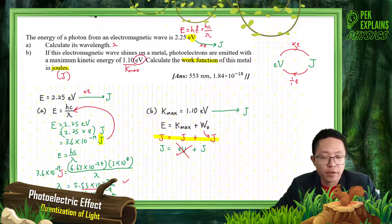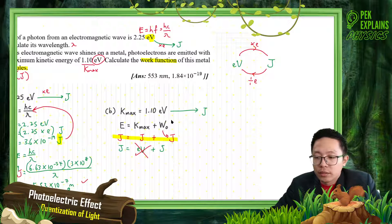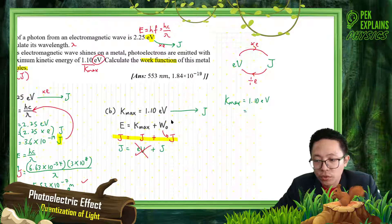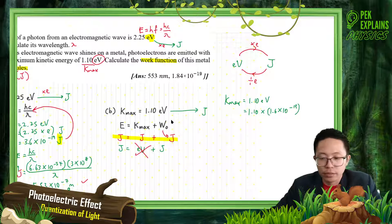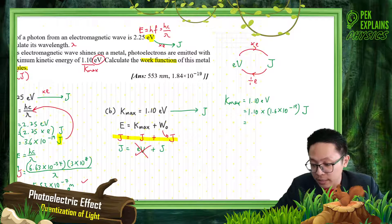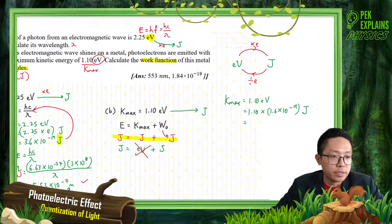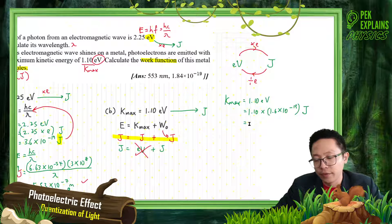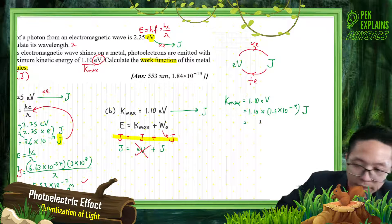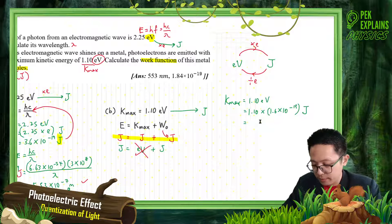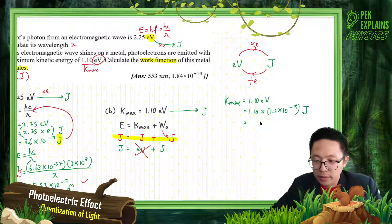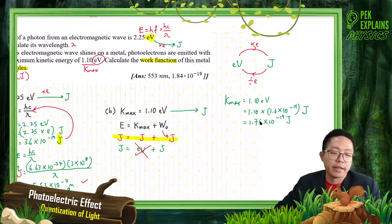To find the kinetic energy in joule: it is 1.10 electron volt, so we multiply by the electron charge 1.6 × 10⁻¹⁹. We get 1.76 × 10⁻¹⁹ joule. That is the kinetic energy in joule, and now we can safely substitute into the formula.